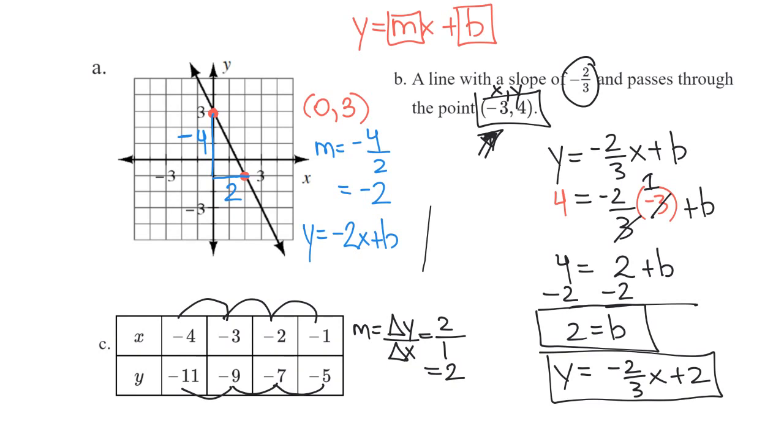And then let's see, if I continue this pattern then at 0, if I go up by 2, I'd have a negative 3. So my y-intercept would be 0, negative 3. So my equation here is y equals 2x minus 3.